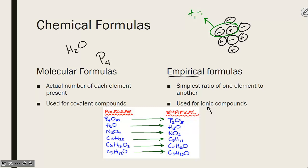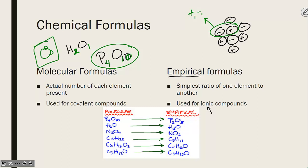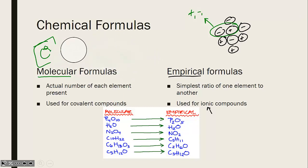When we talk about covalent compounds like water or tetraphosphorus decaoxide, they have a distinct number of each element needed to share electrons and reach their lowest energy state. It takes two hydrogens sharing electrons with one oxygen, or four phosphorus atoms sharing electrons with ten oxygens to make that compound at its lowest energy state. This is an individual entity — these groups stay together through their chemical bonds, known as molecular formulas.